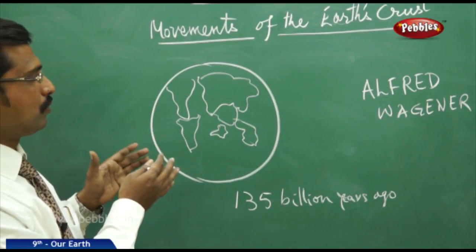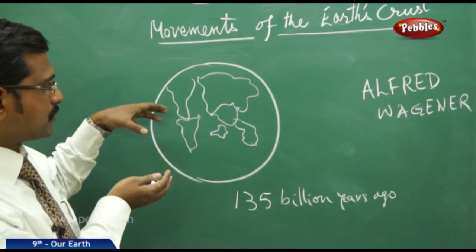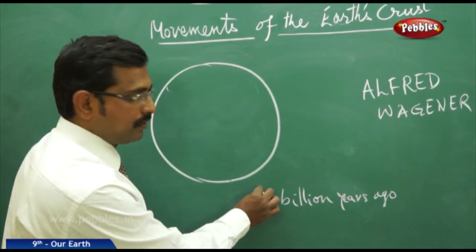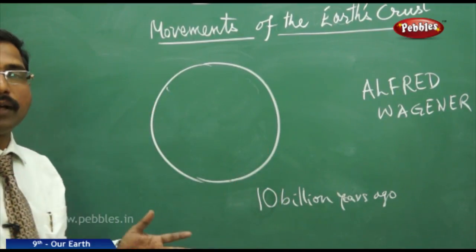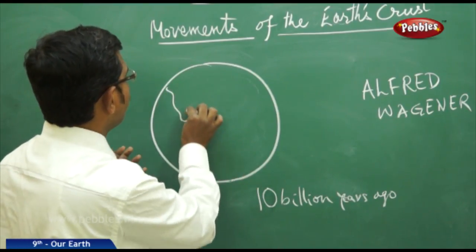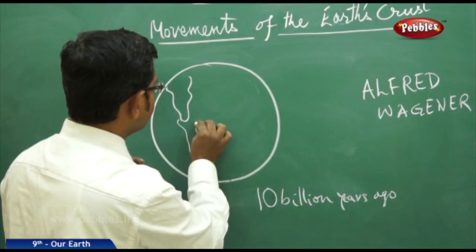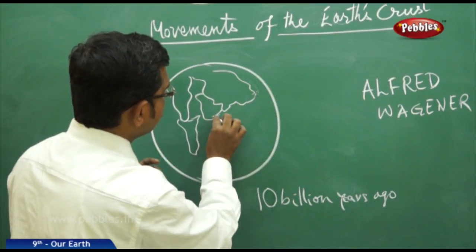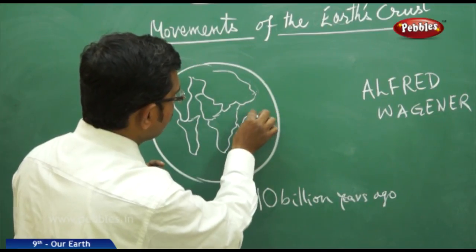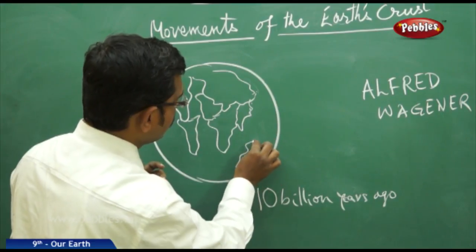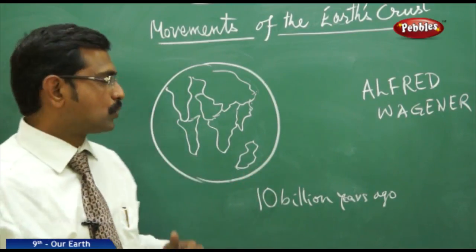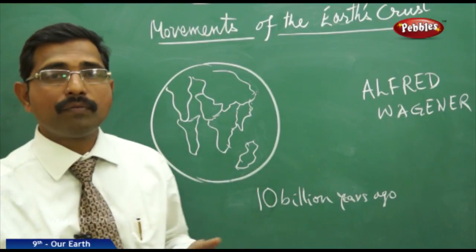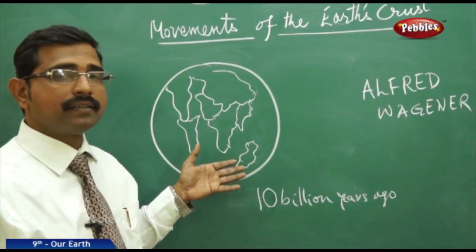Around 10 billion years ago, Australia formed. At that position we had the North American part, South American part, Eurasia — including Europe — Africa, the Indian part, the Asian part, and Australia as a separate continent. Scientists have already done research on this, and these positions have been studied extensively.